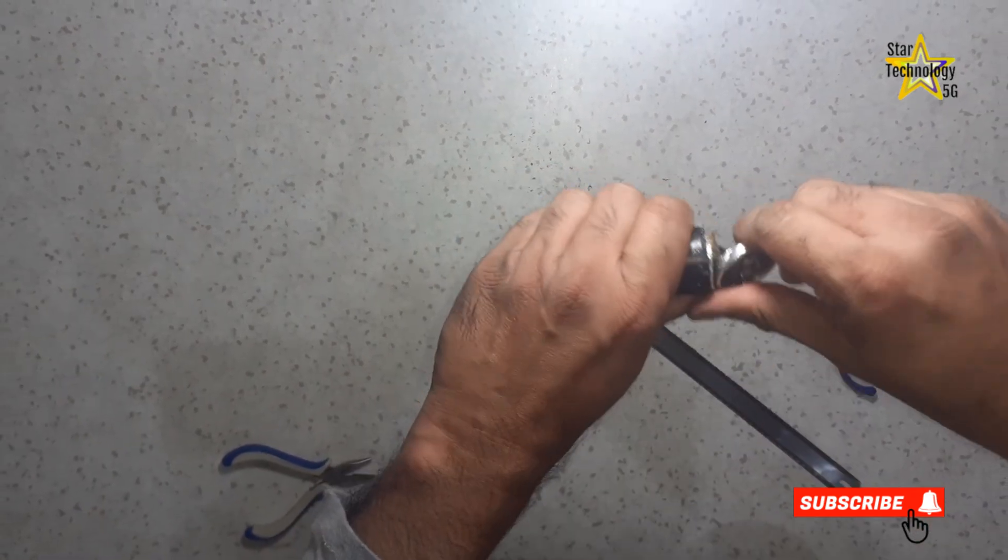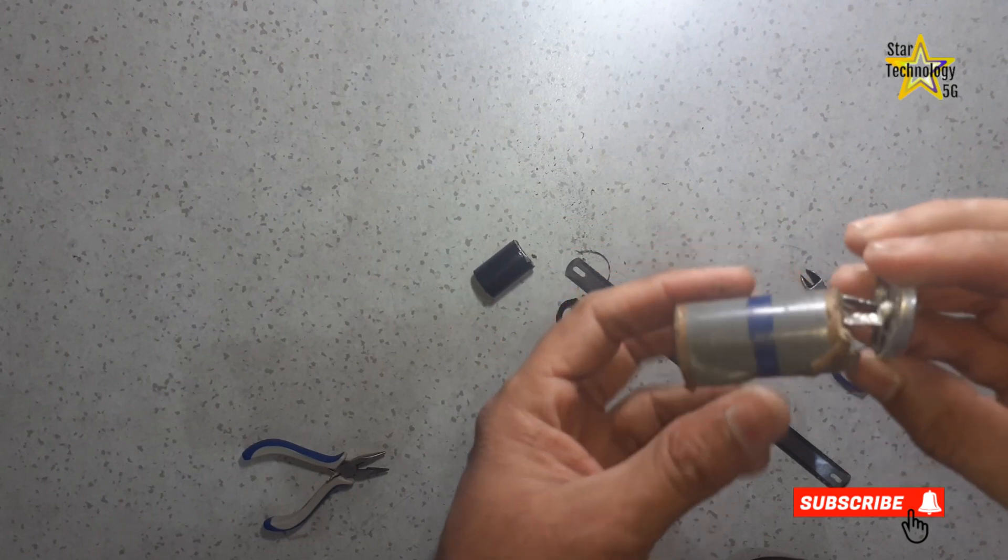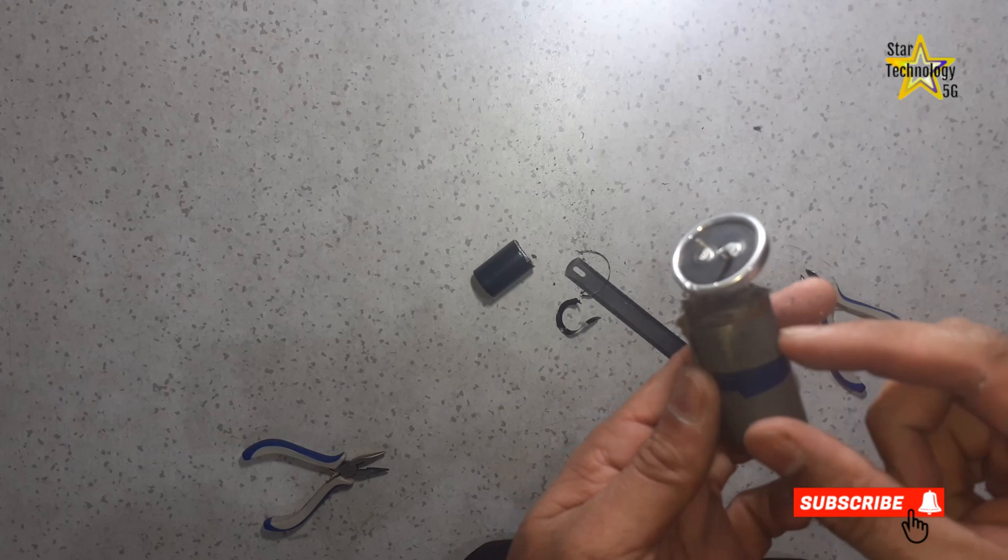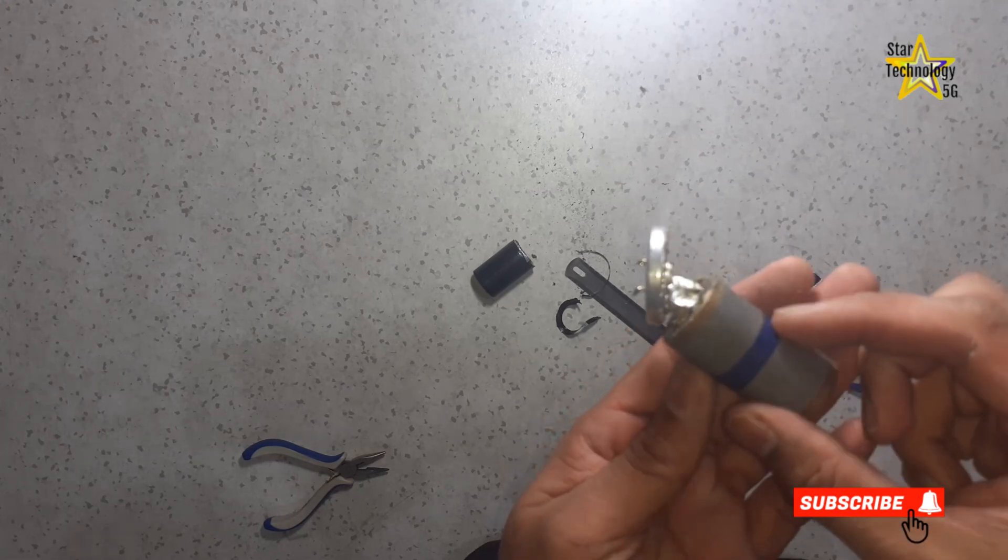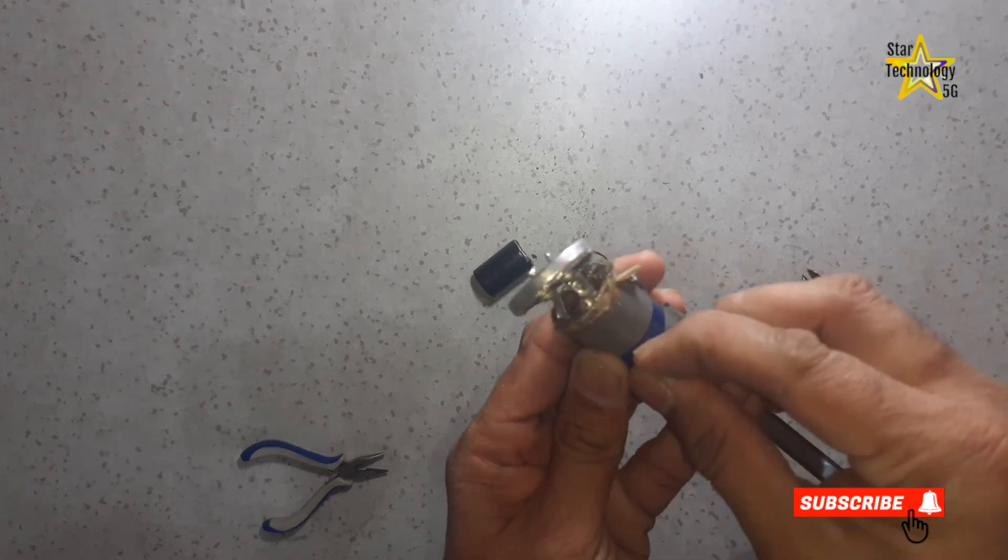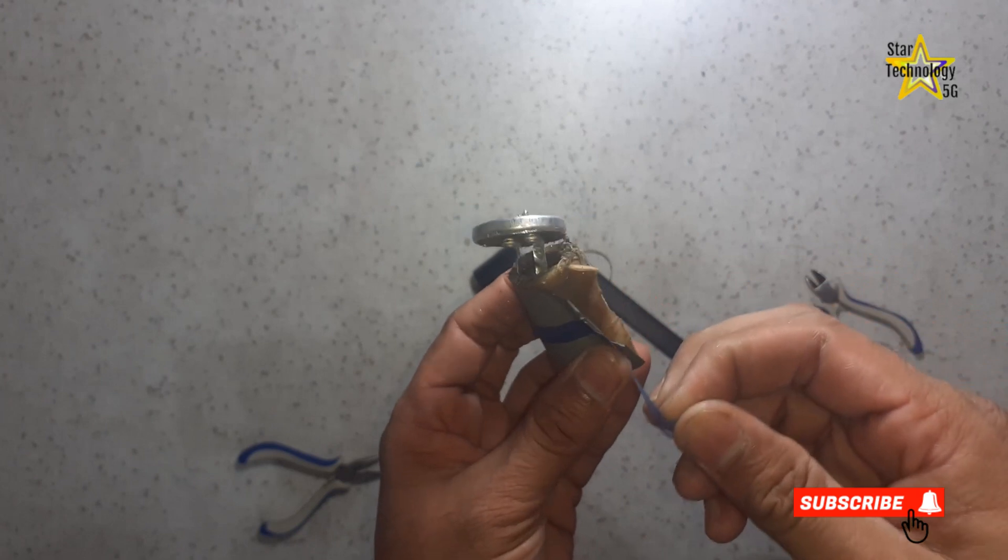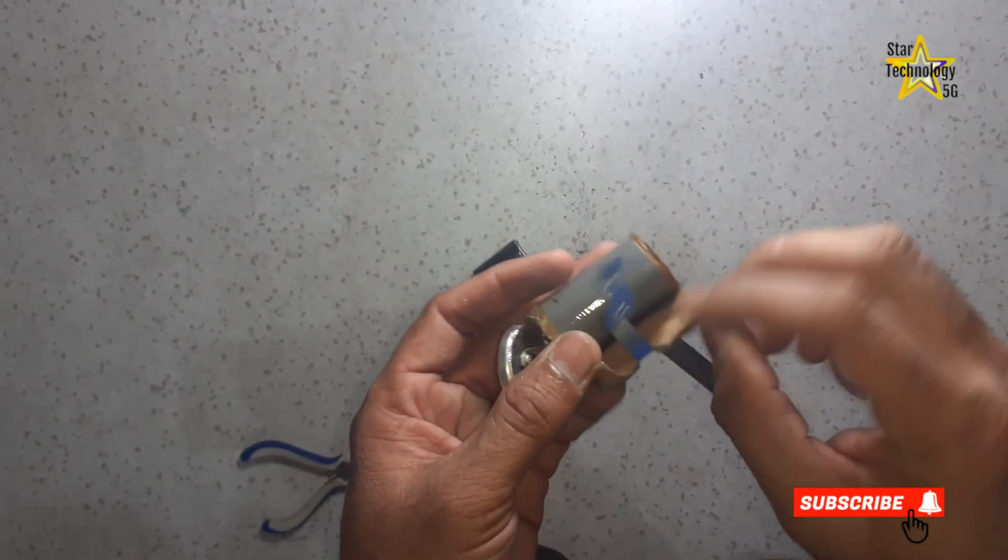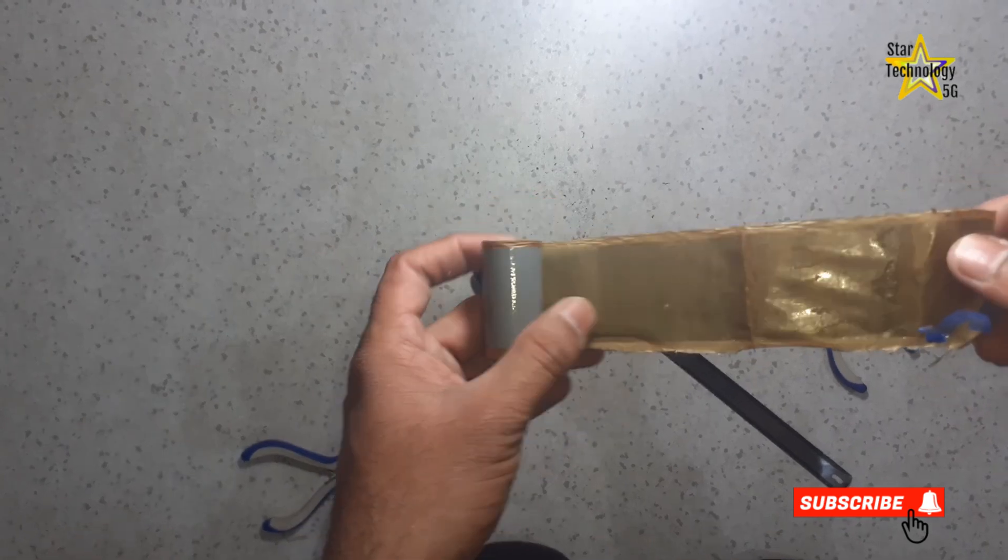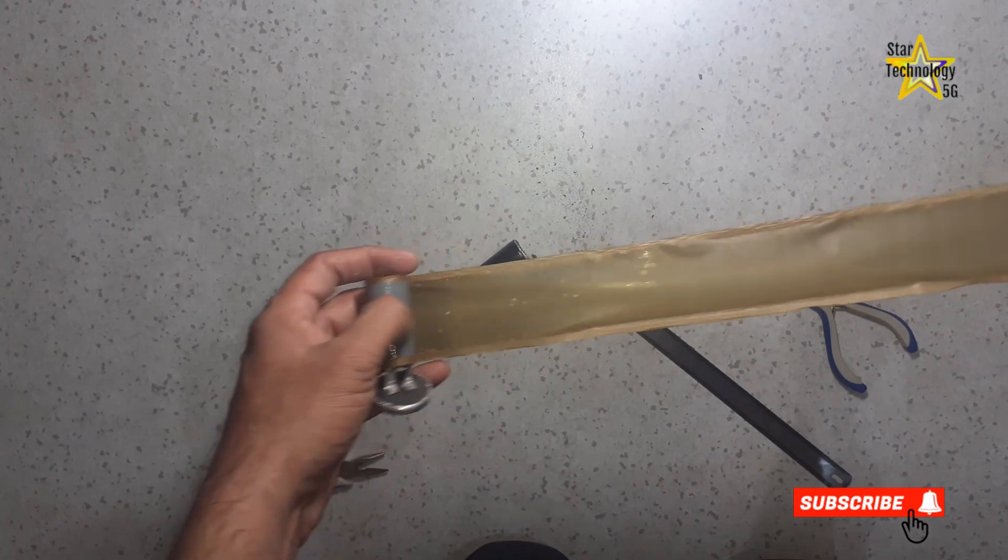Now done. Pull it out. Here is the capacitor's lead. Remove this insulation tape. Let's open it. Slowly open the capacitor. Capacitor looks good. Open slowly.